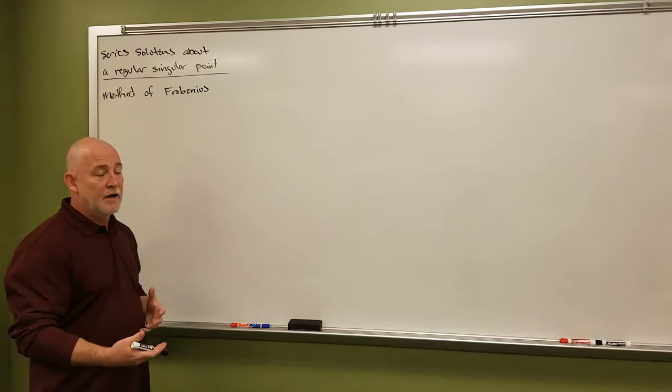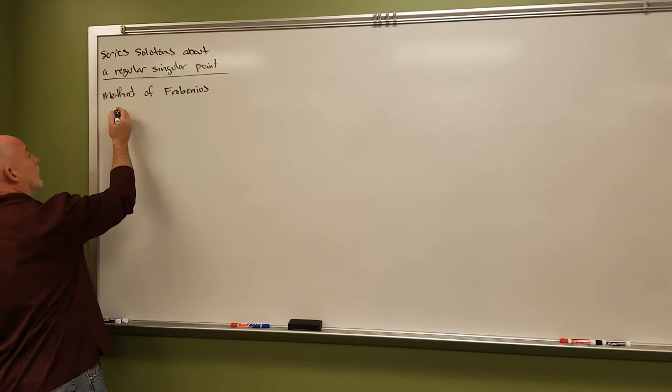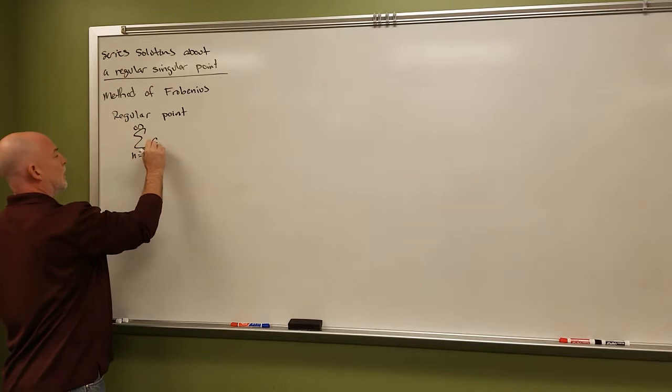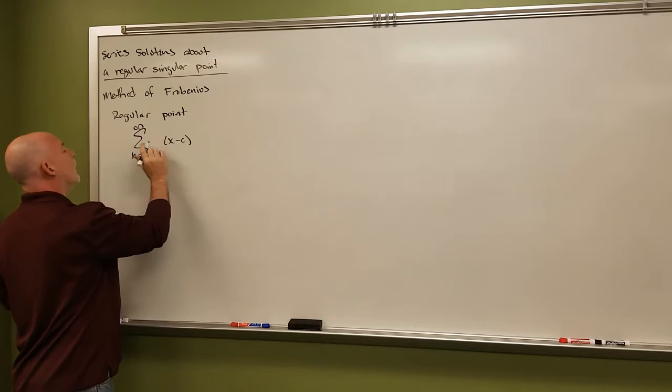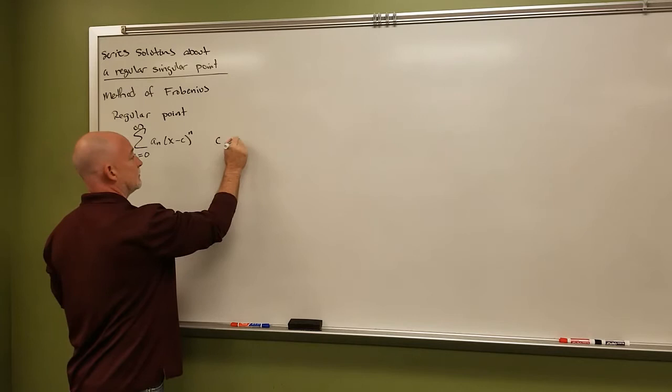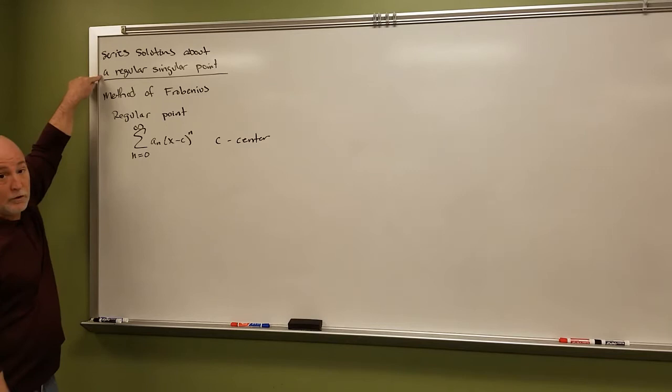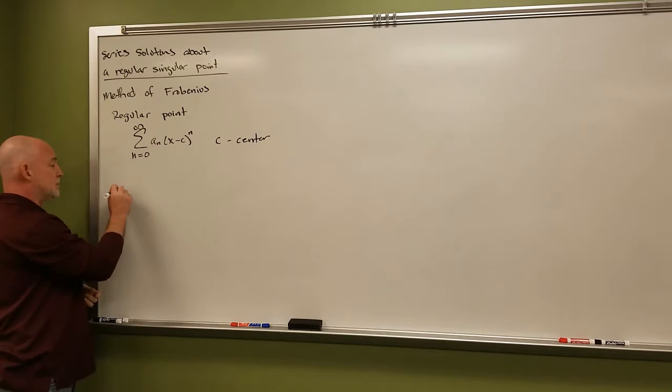Frobenius was a mathematician who came up with the idea that solutions about an ordinary point would have the form: the sum from n=0 to infinity of c_n·(x−a)^n, where c was our center. If that center was a regular point this would work. However, if our center is a singular point then it will not work because this wouldn't be defined there.